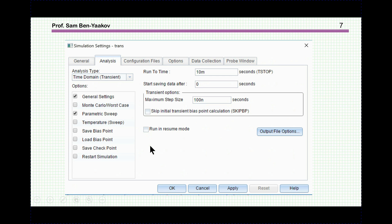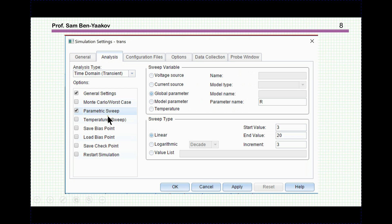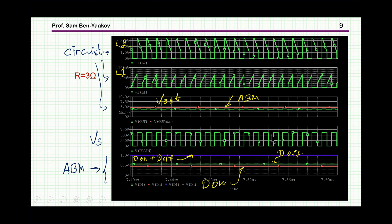So, here is an example. I'm running here a time domain analysis, 10 milliseconds, and then, also, I've added a parameter switch, and the parameter is the load resistor, 3 to 20 ohms, increment of 3 ohms. This is covering both CCM here, and at the end it's DCM. And here's what we are getting. Now, I'm showing here, again, a time domain. This is for the actual switched circuit.